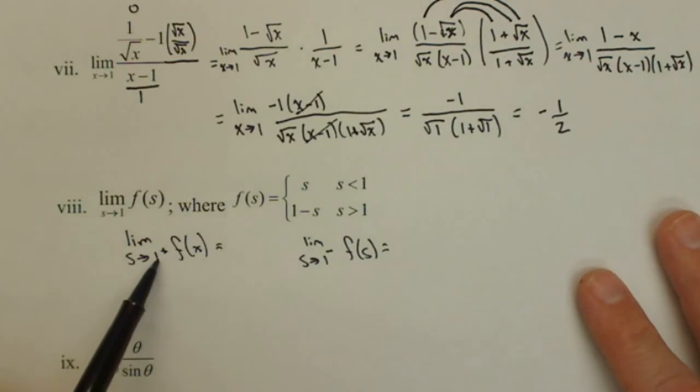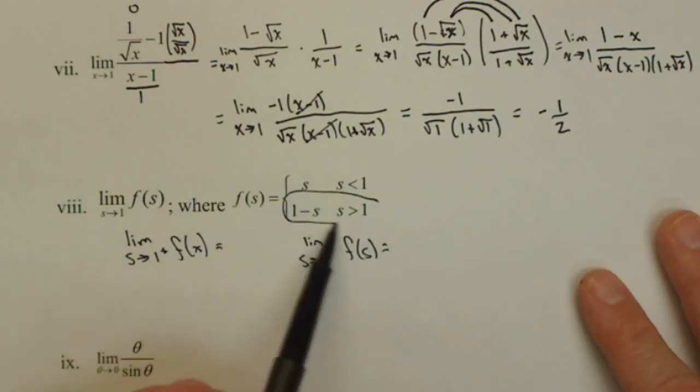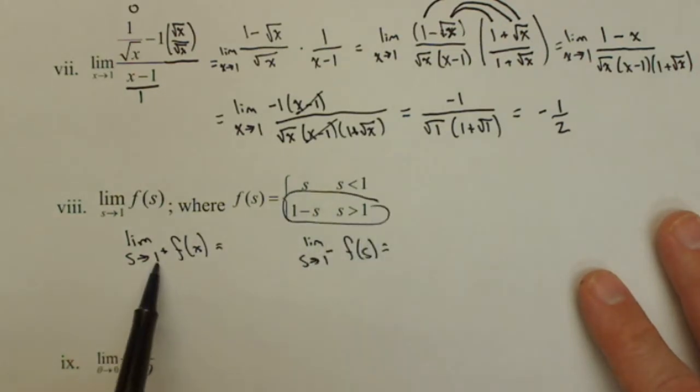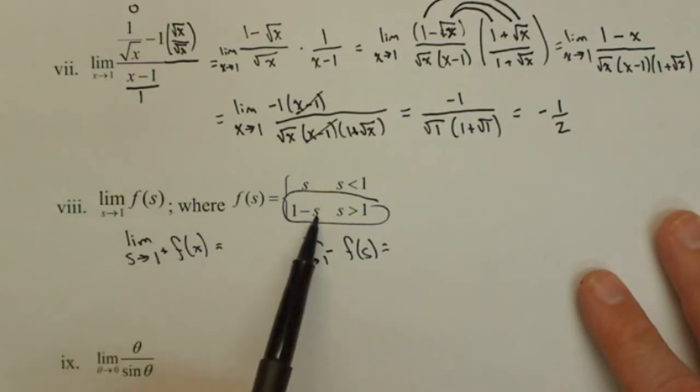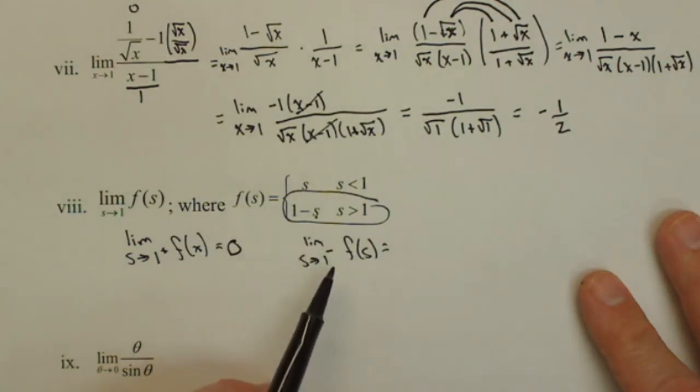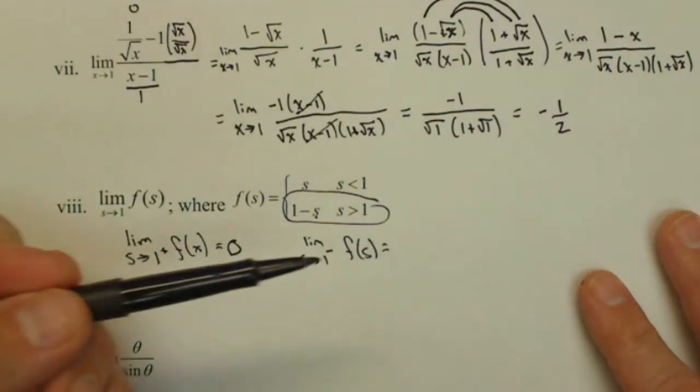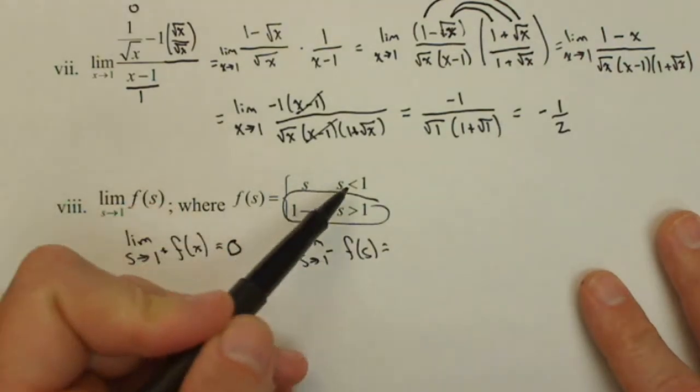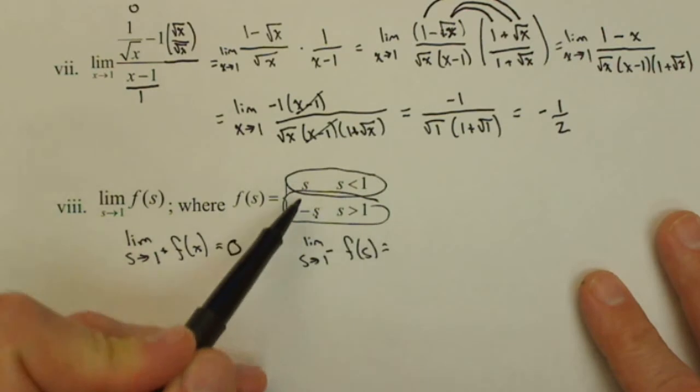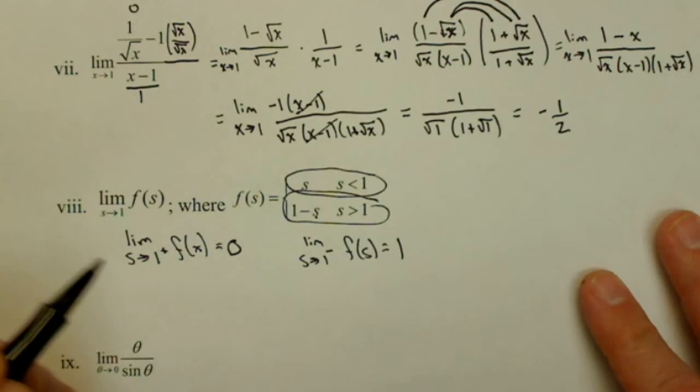So as we approach 1 from the right, we're coming from values that are greater than 1, so we're on this piece right here. The nice thing is this can be solved by direct substitution, so as s goes to 1, we'll have 1 minus 1, or 0. As s approaches 1 from the left, that means we're coming in from the left towards 1, so it's coming in from the negative values. Puts us on this piece, well, as s goes to 1, s is going to be 1.